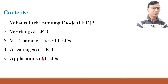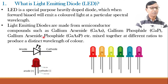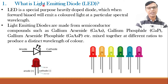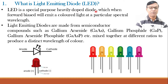Starting with the name itself — light emitting diode. Light means photons or radiations, emitting means releasing, and diode means a device that has got two electrodes: anode and cathode. So a device that has two electrodes and radiates or emits light is known as a light emitting diode or LED. LED is a special purpose heavily doped diode which, when forward biased, will emit a colored light at a particular spectral wavelength.